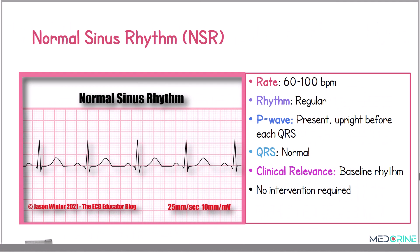The first rhythm is a normal sinus rhythm. A normal sinus rhythm is characterized by a heart rate of 60 to 100 beats per minute, regular rhythm, and the presence of upright P waves before each QRS complex. This rhythm indicates normal electrical activity originating from the sinoatrial node. Its clinical relevance is that this is the baseline rhythm and no intervention is required.